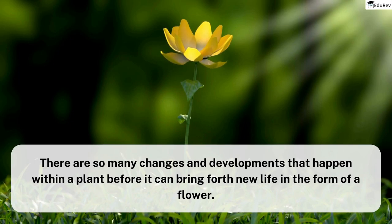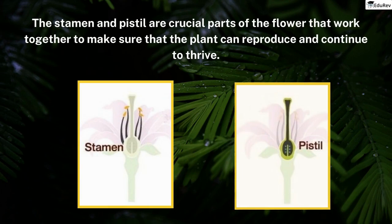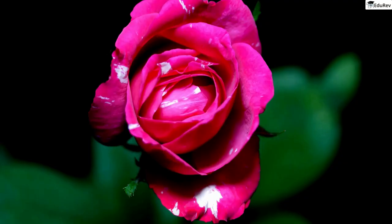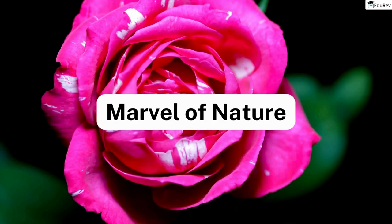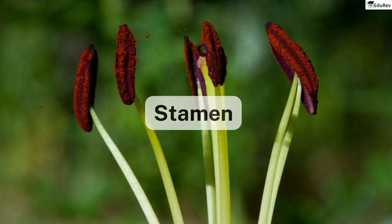The stamen and pistil are crucial parts of the flower that work together to make sure that the plant can reproduce and continue to thrive. It's truly a marvel of nature how everything comes together to create something so beautiful and essential to the survival of the plant. In this video, we will learn one of the important parts of the flower — the stamen — in detail.